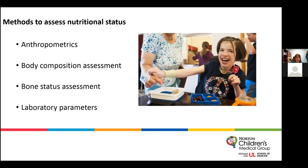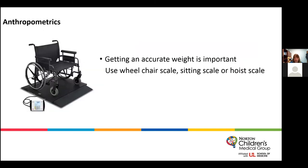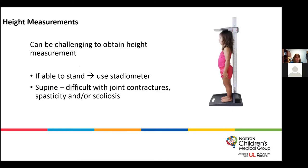There are many methods to assess nutritional status: anthropometrics, body composition, bone status assessment, and lab parameters. Getting an accurate weight is critical. We're fortunate in our outpatient clinics to have wheelchair scales, sitting scales, and hoist scales available for this purpose.